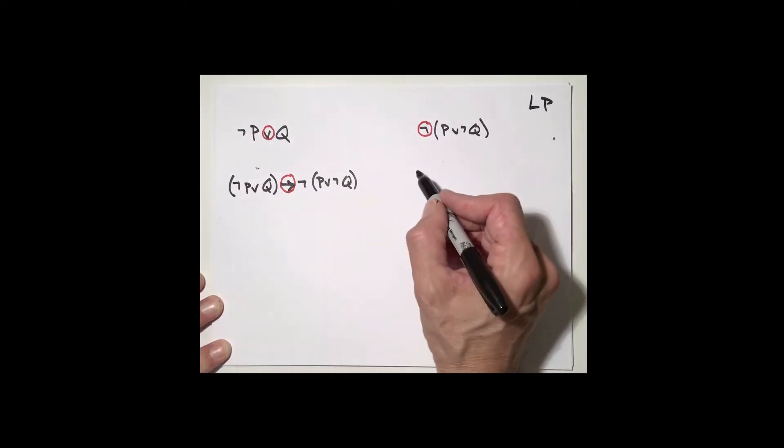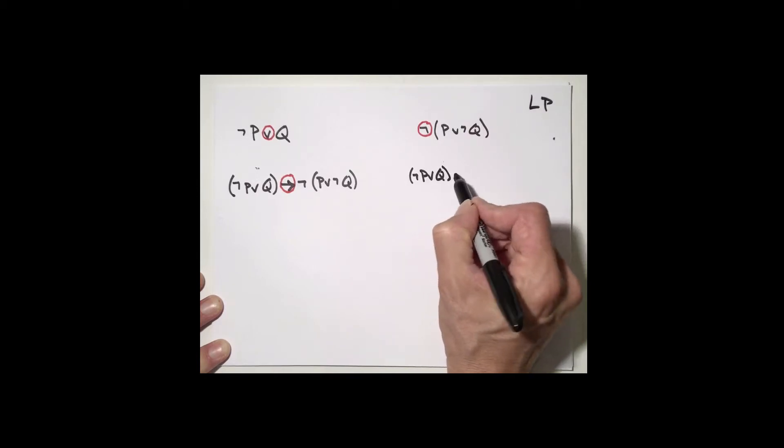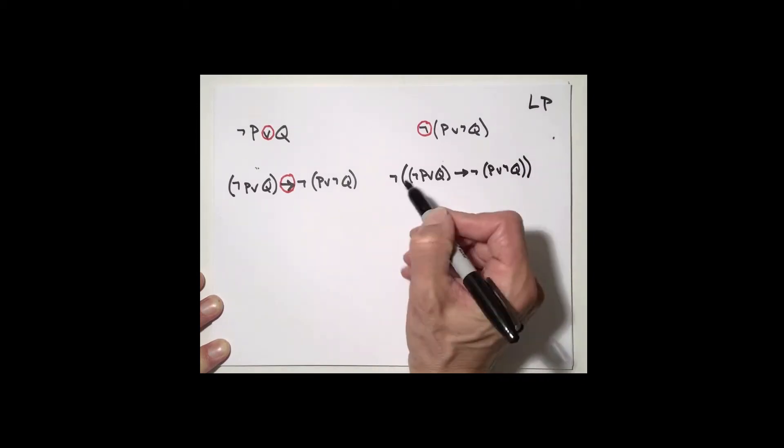We would start a truth tree with the negation of that sentence. So the negation of that sentence is going to be this. I'm going to write it down slowly so that I can show you how to make the negation of that sentence really clearly. So I'm going to write down not P or Q, arrow, not P or not Q. And then I want to negate this whole thing. So I have to put parentheses around it and then put a negation symbol out front.